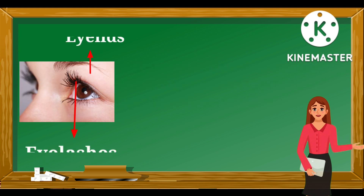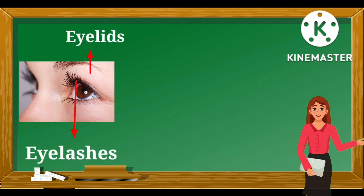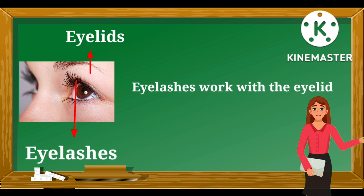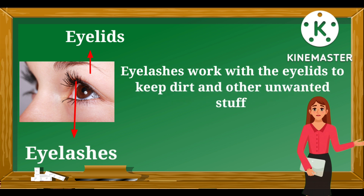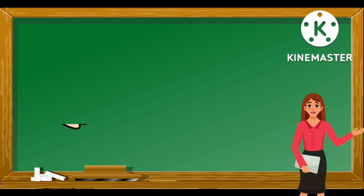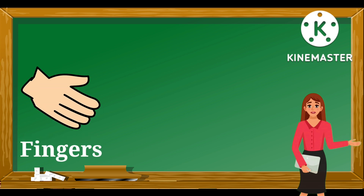These are eyelashes — E-Y-E-L-A-S-H-E-S — and eyelids — E-Y-E-L-I-D-S. Eyelashes work with the eyelids to keep dirt and other unwanted stuff out of your eyes.